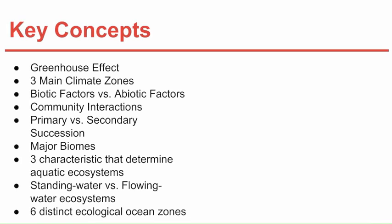Key concepts from chapter four: know the greenhouse effect and what causes it, and that it is beneficial. Know the three main climate zones — polar, temperate, and tropical. Know biotic versus abiotic factors, community interactions in ecosystems, and the difference between primary and secondary succession. Know all major biomes with key characteristics, the three characteristics that determine aquatic ecosystems, the difference between standing and flowing water freshwater ecosystems, and the six distinct ecological ocean zones.